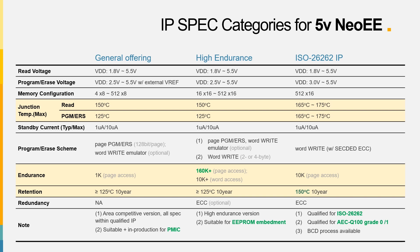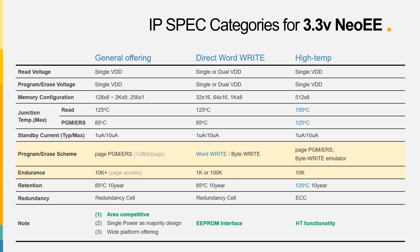For users requesting a higher reliability standard, NeoEe can either build an ECC function inside, or deliver sufficient I/O bandwidth for customer-owned error code detection and correction mechanisms. Other than 5V solutions, NeoEe also provides various specifications for 3.3V users. The function and benefits for general offerings are similar to the 5V ones. However, we made a further collection of direct-write IPs for users familiar with the EEPROM function and interface, and still expecting low-bit-count MTP solutions. We are also expanding our 3.3V IP portfolio of NeoEe to higher operating temperatures and retention specs for specific fields.